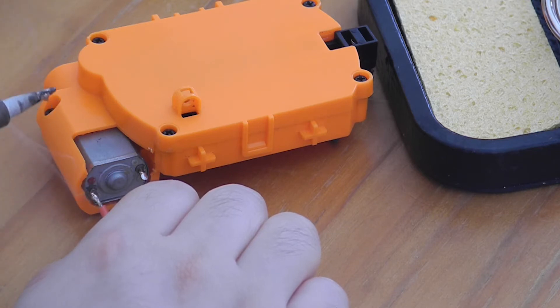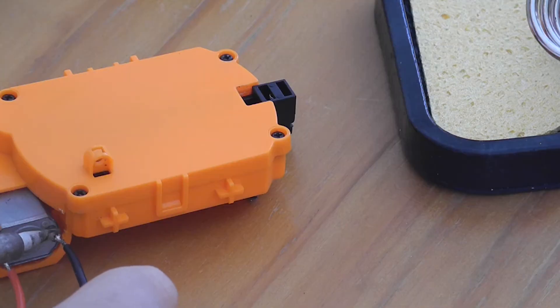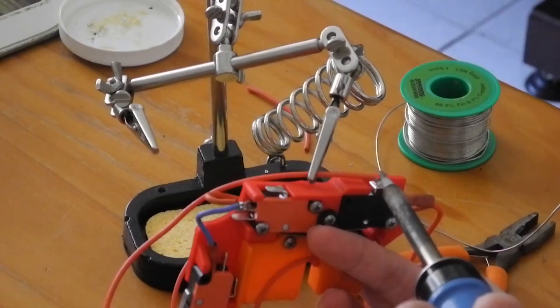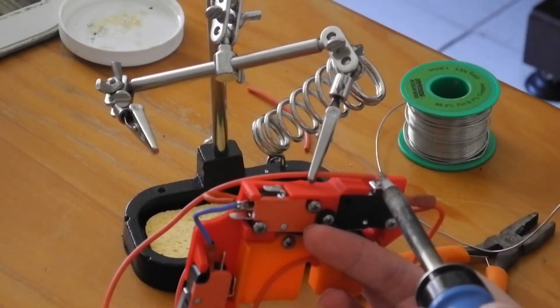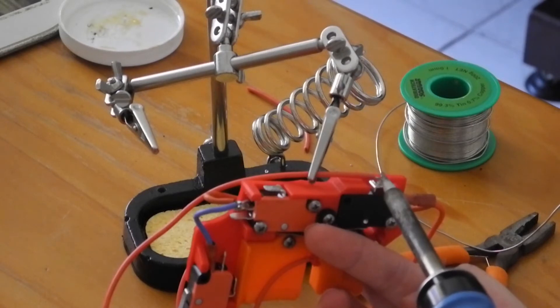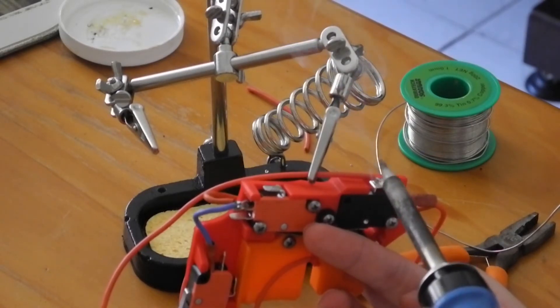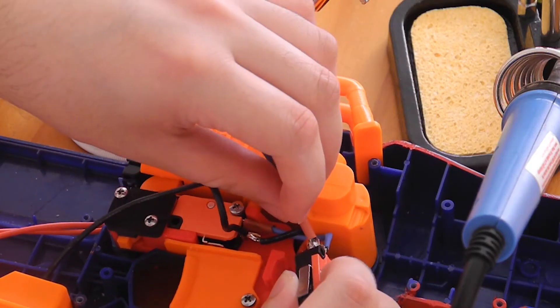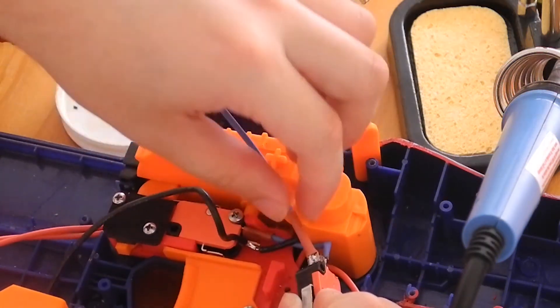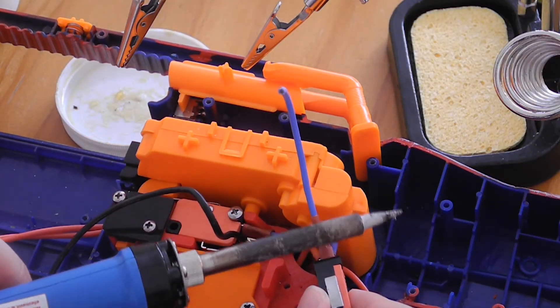Solder the wires to the pusher motor and connect the wires to their respective terminals. The black wire will go to the normally open on the pusher switch and the red wire will go to the common on the main trigger switch.